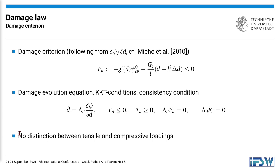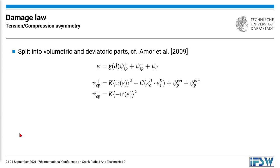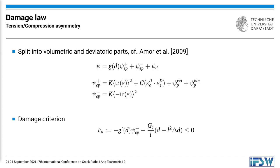Up until now no distinction has been made between tensile and compressive loadings. For this purpose a split into volumetric and deviatoric parts is introduced. The split is based on the decomposition of compressive and tensile contributions to the free energy density based on the sign of the trace of the strain tensor, and with this split the damage criterion can be modified so that only the tensile contributions of the free energy density are included in the damage criterion.